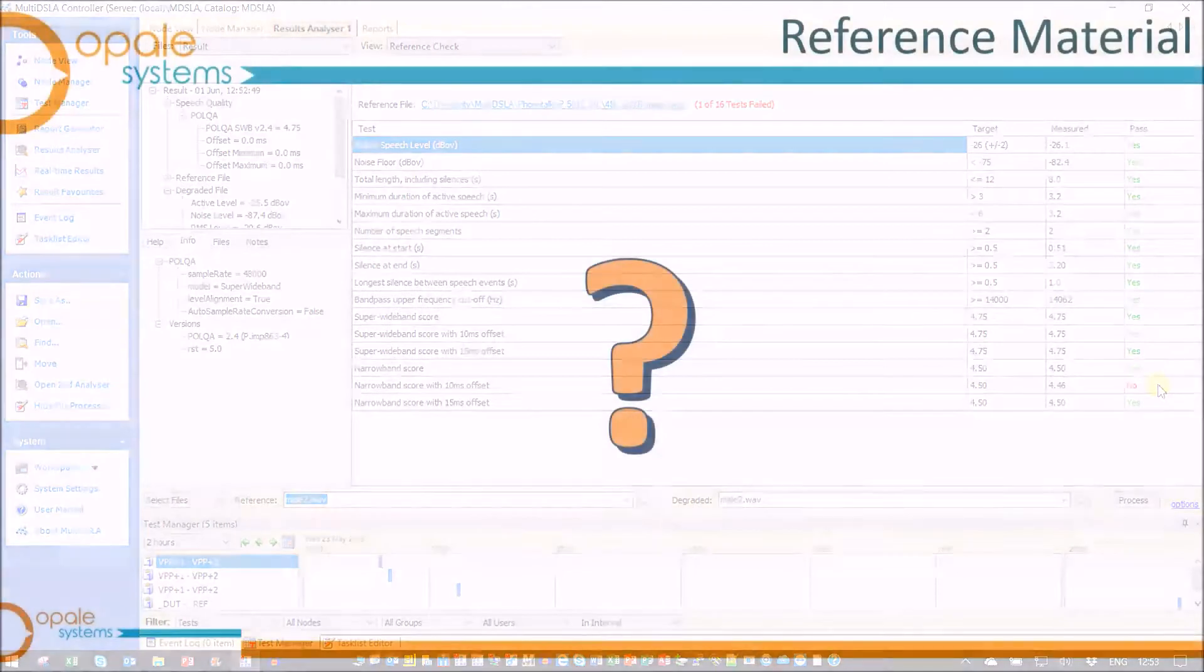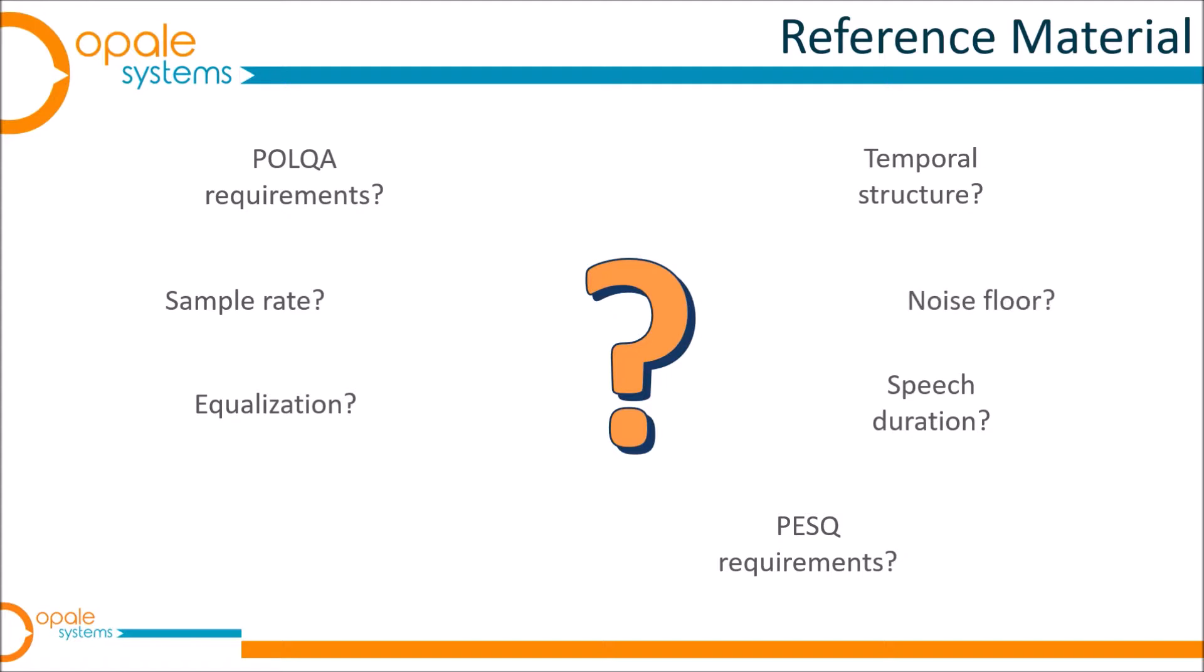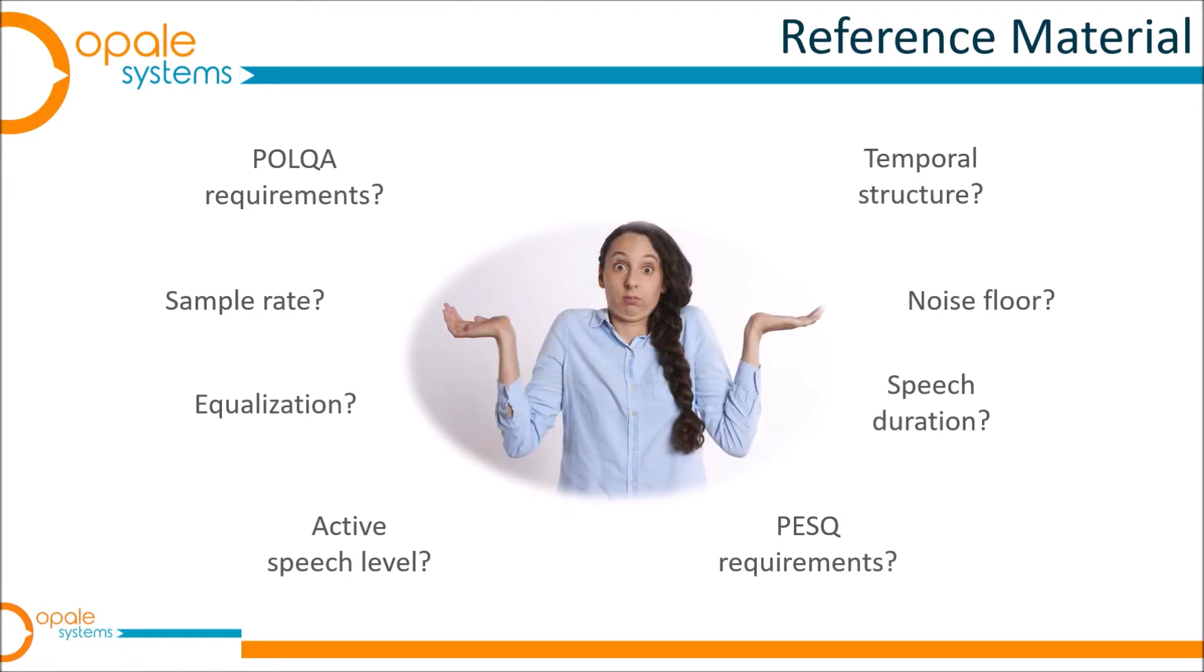So it's all looking a little bit complicated, isn't it, with various things that we need to take into account? If we don't get it right, we're going to put at risk the accuracy and reliability of our PESQ and POLQA results. But don't worry too much, because the MultiDSLA test system makes all of this very simple. All we have to do is follow the very simple process which I'm going to show you next.